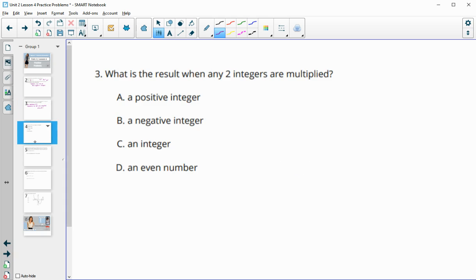Number three: what is the result when any two integers are multiplied by each other? Remember, integers are positive and negative whole numbers. If we multiply any two integers together, it's not necessarily positive because if we do -2 times 3, those are both integers, and that's negative. So it doesn't have to be positive.